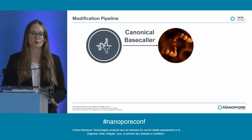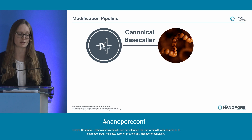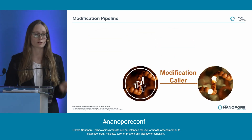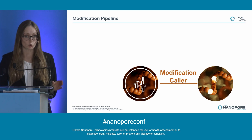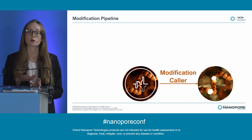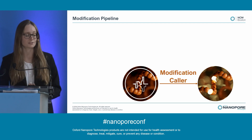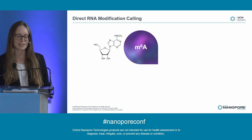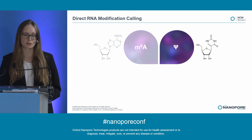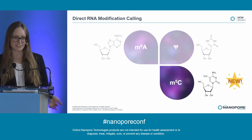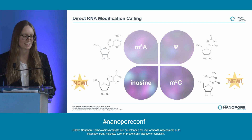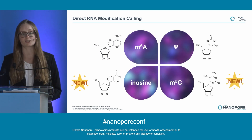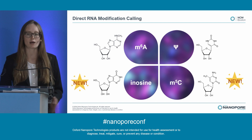Now that we have a canonical base caller that works, we want to take the signal and the sequence that it emits and combine them for the modification caller. The modification caller can take the base that the base caller has emitted and look at the signal to determine whether or not that base is modified. So from direct RNA sequencing, we now provide m6A, pseudouridine, m5C — which is the new mod we recently announced — and Inosine, which is new at this conference. This gives us a full suite of four modifications that you can identify from our direct RNA signals.